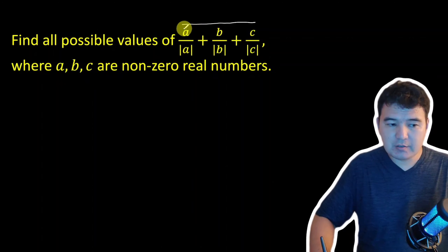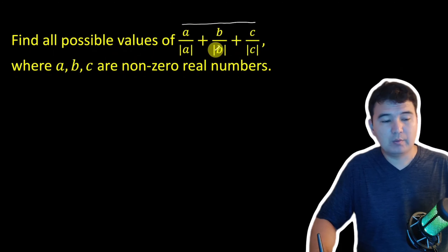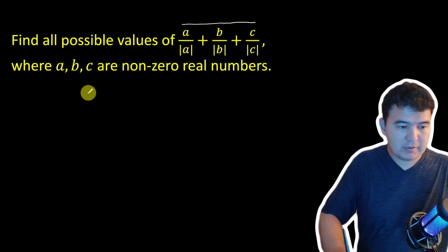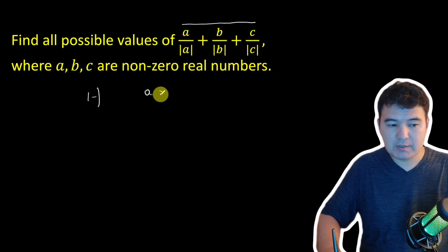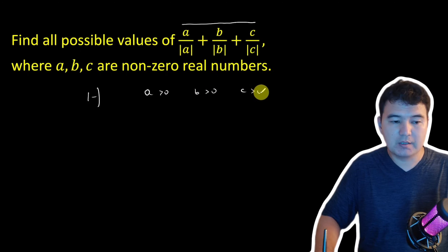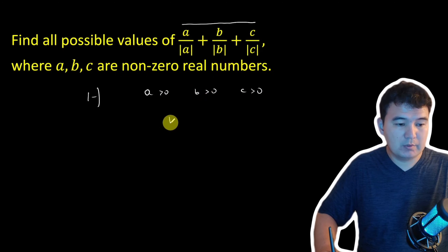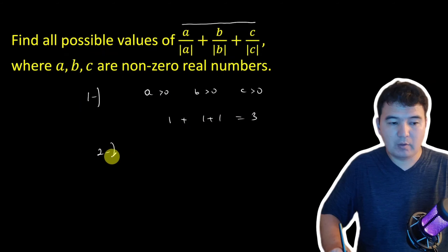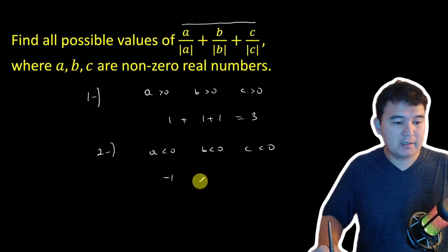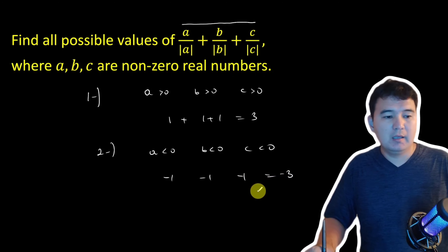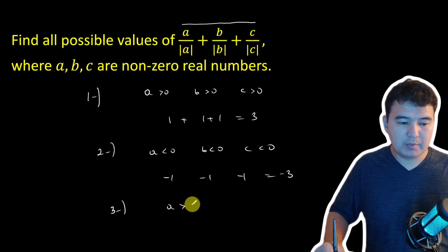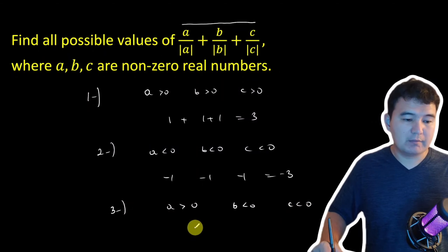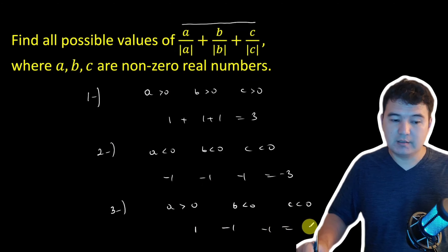For each of the variables A, B, C, each of these expressions can be plus 1 or negative 1, and we have to see all possible options. The first option: if all of the numbers are positive, all of the expressions are going to be 1, so the result is going to be 1 plus 1 plus 1, which is 3. The second obvious case: if all of them are negative, we will have negative 1 in all three cases and the result is negative 3. There are a couple more options — if only one of them is positive and two others are negative, we will have 1 minus 1 minus 1, which results in negative 1.